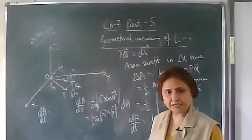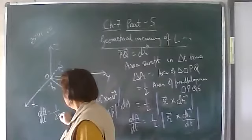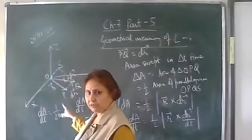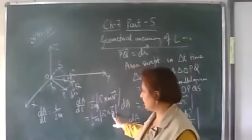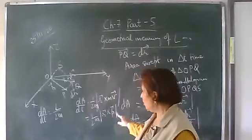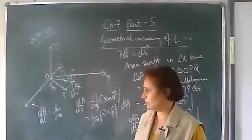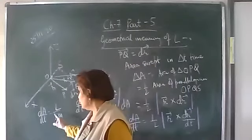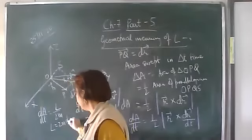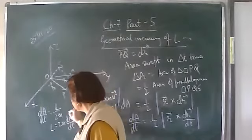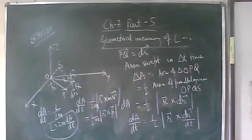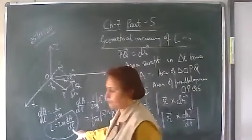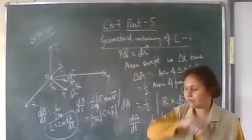Now multiply and divide the right hand side by M, the mass of the particle, because we will get mass into velocity which is the linear momentum. So dA upon dT equals 1 upon 2M times the magnitude of R cross P vector. R cross P vector is the angular momentum, so dA upon dT equals 1 upon 2M times the magnitude of angular momentum L. Therefore the angular momentum is equal to 2M into dA by dT. This expression is called the geometrical meaning of angular momentum.